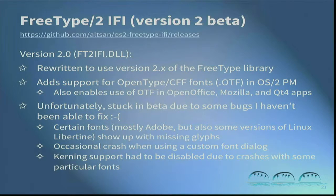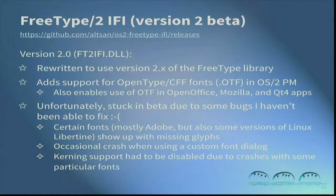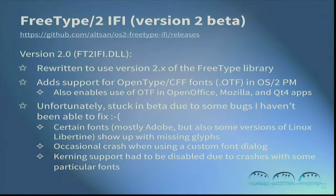One of my pet projects: a few years back I decided to write a new version of FreeType 2 IFI which uses version 2 of the FreeType library. The main advantage is that it allows OTF fonts to be supported on OS/2. Because they use the system font drivers to get the names of installed fonts, this even allows applications like Firefox, OpenOffice, and Qt4 to use OTF fonts, even though they use their own separate versions of FreeType to render them. You can download pre-release beta versions from my GitHub page. Unfortunately I haven't made an official release yet because it still has some annoying bugs I have not been able to fix, which are listed on the slide.